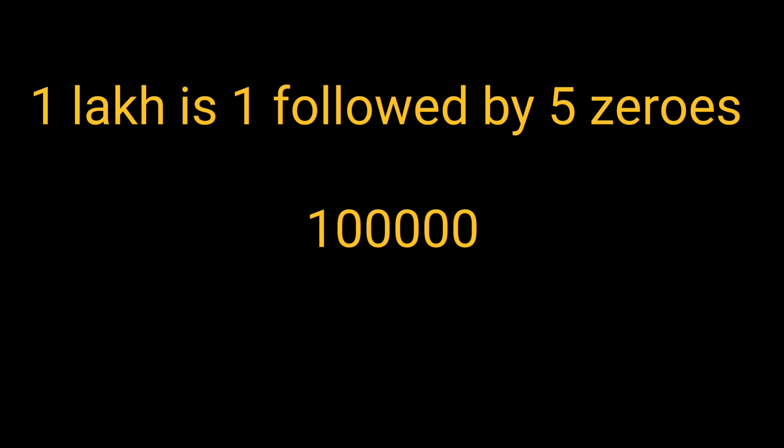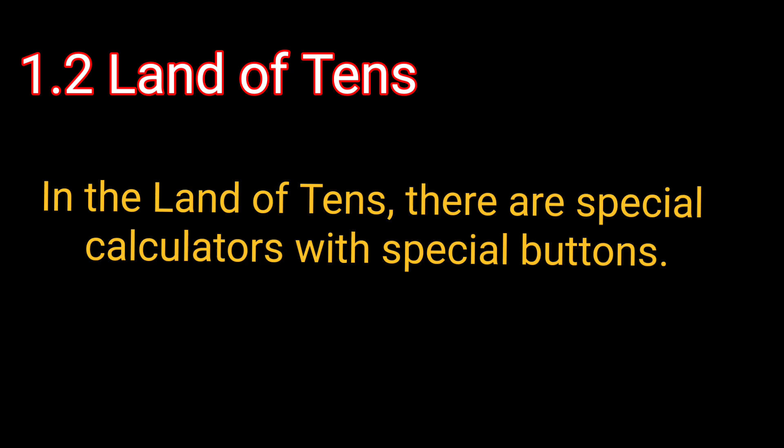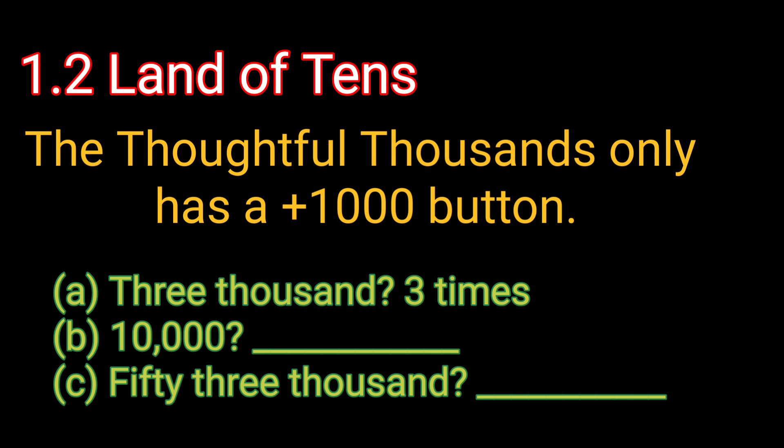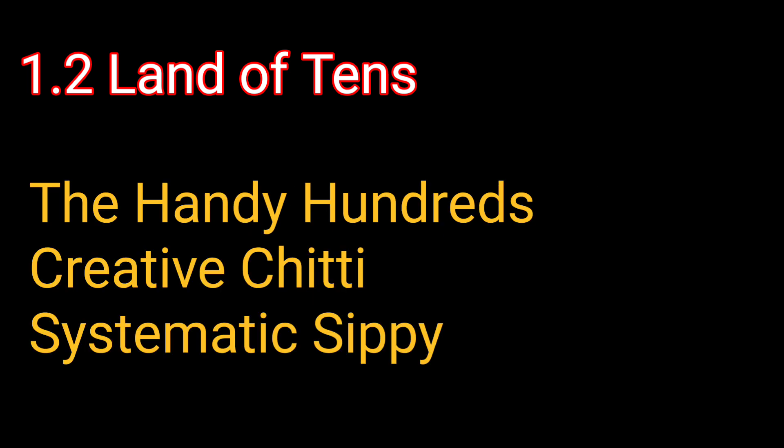You will also learn to read and write 6-digit and 7-digit numbers. In section 1.2, land of tens, you would explore the concept of place value using imaginary calculators with special buttons. For example, the Thoughtful Thousands has only a plus-thousand button, so it can add only 1000 at a time. Similarly, the Tedious Tens has a plus-10 button. Other imaginary calculators are Handy Hundreds, Creative Chitti, and Systematic Sippy. These are given just for learning purposes.